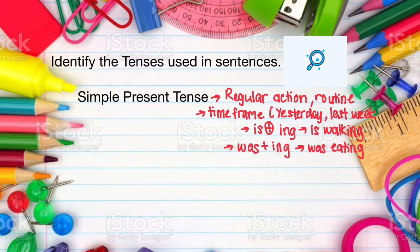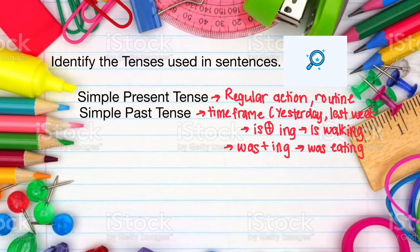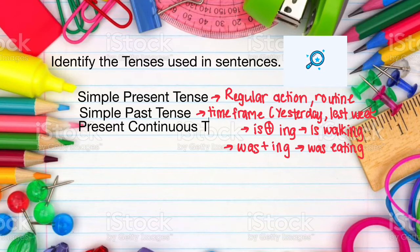Second, simple past tense, which is used when the time frame is stated, like yesterday, last week, just now, and so on. Third, present continuous tense, which can be identified by having a verb to be in present form plus a verb with -ing. For example, is walking.